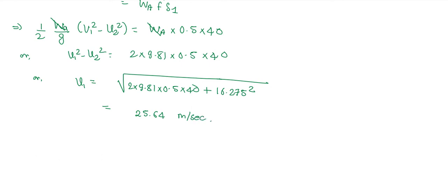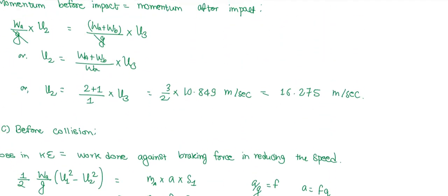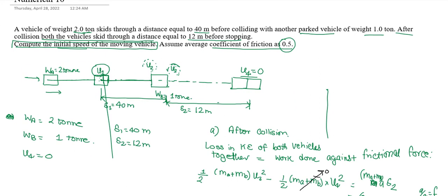So the initial velocity B1 is 25.64 meters per second. Converting to kilometers per hour: 25.64 multiplied by 3.6 gives approximately 92.3 kilometers per hour. Hence, the initial velocity of the vehicle is 92.3 kilometers per hour. This is how we compute the initial speed of the vehicle in this collision case.